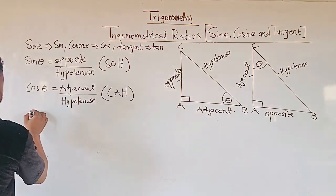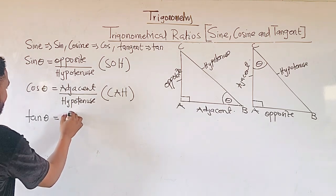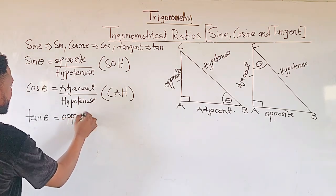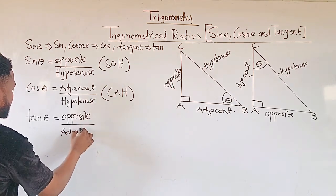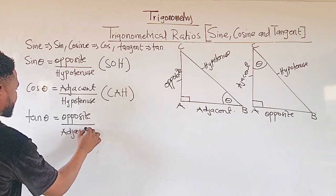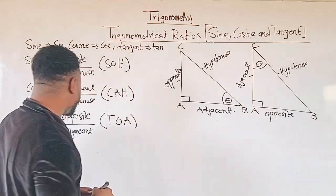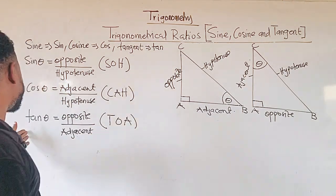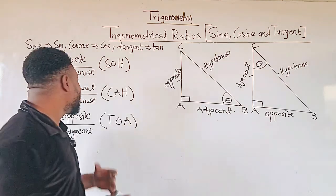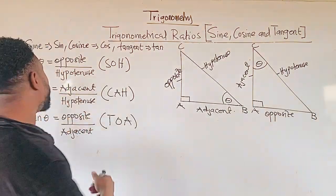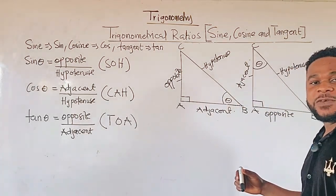Again, we have our tan. So we say tan theta, which takes opposite over adjacent. In short, we say TOA — so when we say TOA, you respond: tan theta equals opposite over adjacent. This is how we can relate our trig ratios to the right angle triangle. In our next video, we are going to learn how to apply them to solve questions.